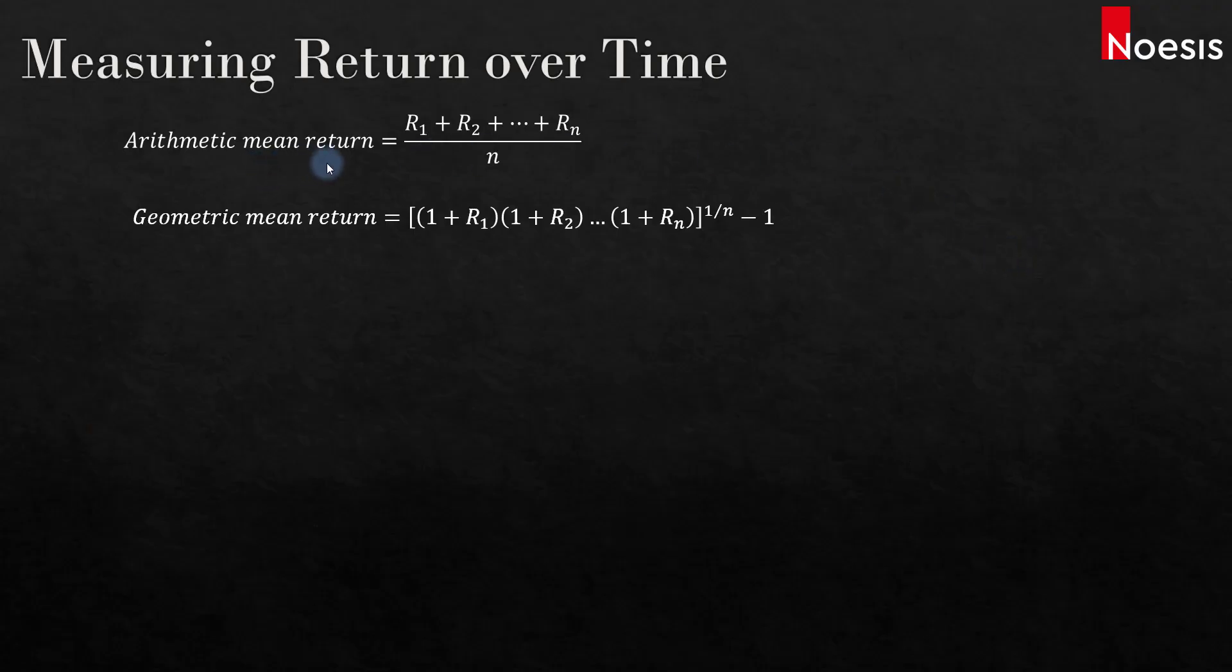The formula for arithmetic mean return is to sum all the returns and divide by n, the number of observations. For geometric mean return, we take 1 plus the return of every period, multiply it to the same term for n periods, and then raise the whole product to the power of 1 over n minus 1.